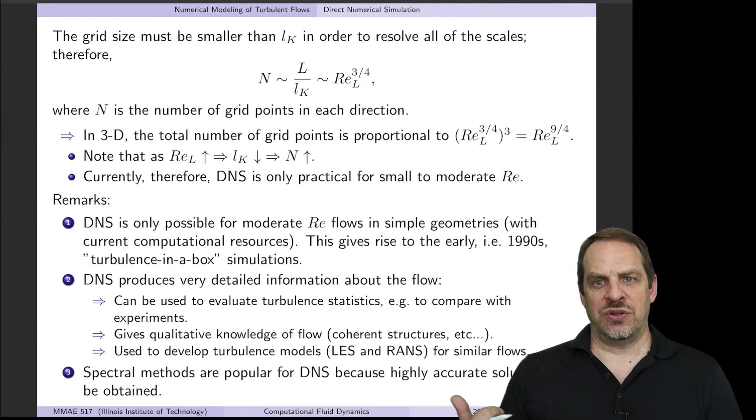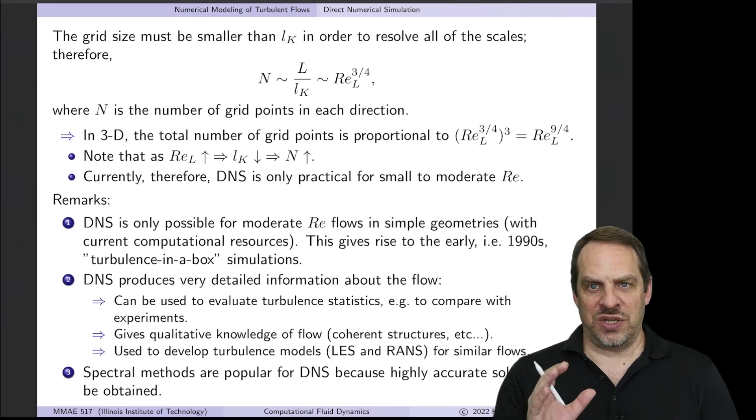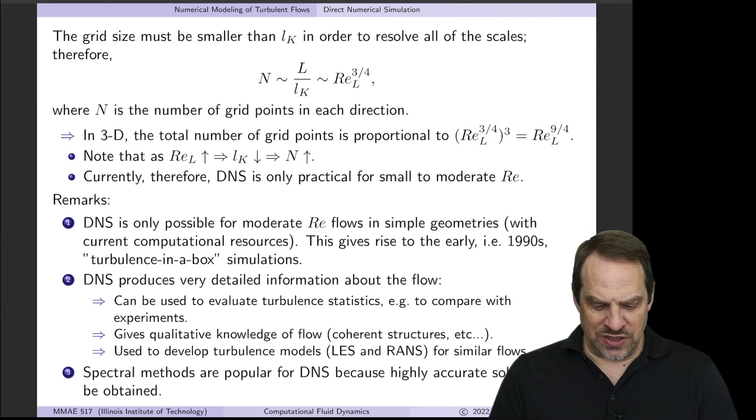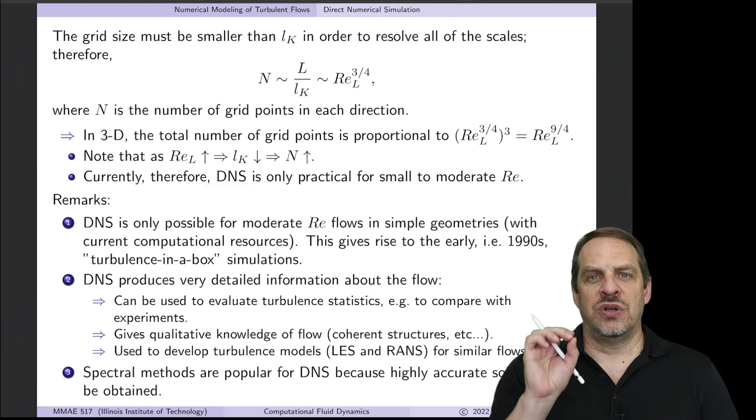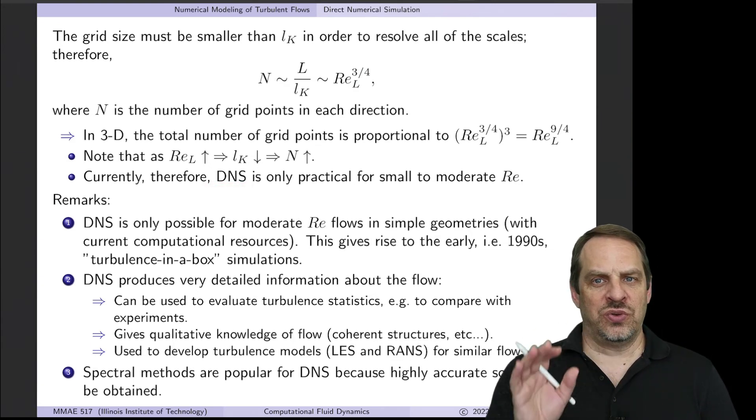So what we can do today, versus what we could do ten years ago, twenty years ago, of course has changed. But it's still very much the case, and it will be the case for quite some time, that DNS is only practical for moderate Reynolds numbers.